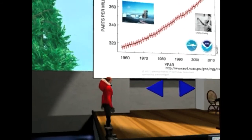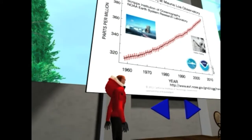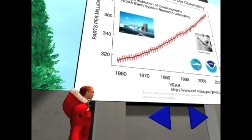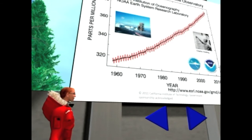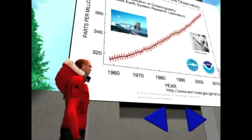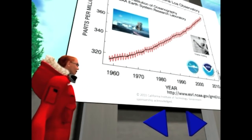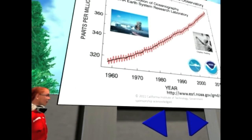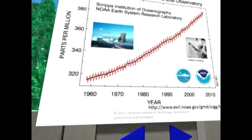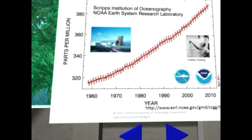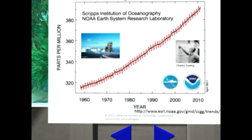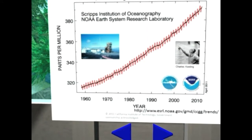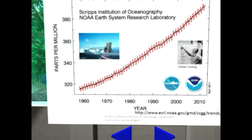As you can see on the left, it starts in 1957 — I've taken the most recent snapshot, current to April of 2011. You can see it's been rising steadily from a level when Charles Keeling started these measurements of about 315 parts per million, up to current day levels of over about 390 parts per million.